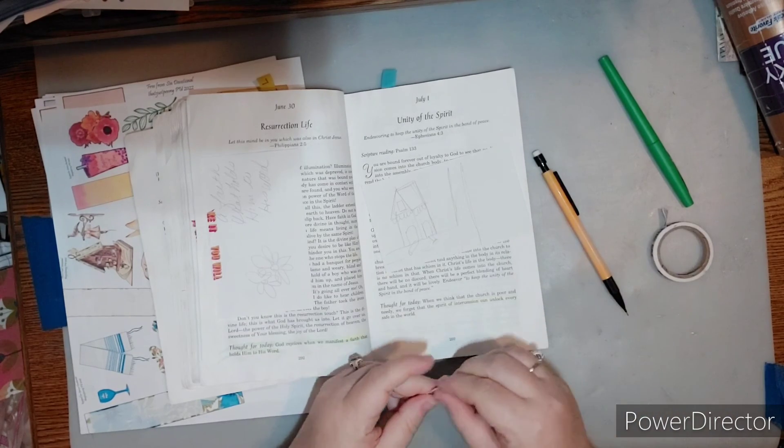And I'm just going to skim through here really quickly. I'll tell you about the thought for today. When we think that the church is poor and needy, we forget that the spirit of intercession can unlock every safe in the world. You will find that all true prophecy will be perfectly full of hopefulness. It will have compassion. It will have comfort. It will have edification.